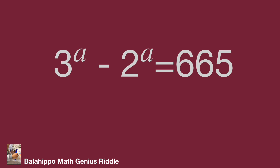In this video, our idea is to compare the value of last digits. The last digit of 665 is 5. We try to find the right value of the last digits by checking 3 power A, 2 power A, and 3 power A minus 2 power A — specifically, what are their last digit numbers?